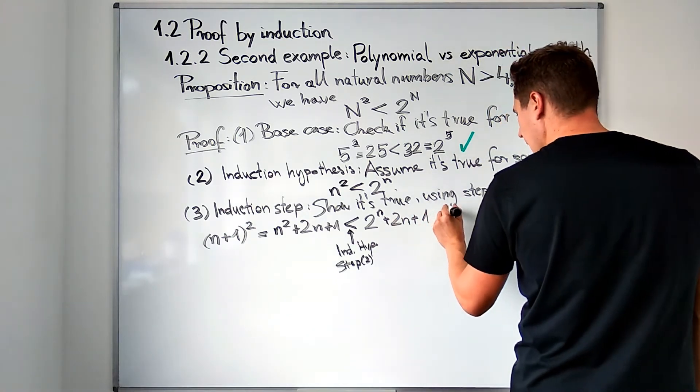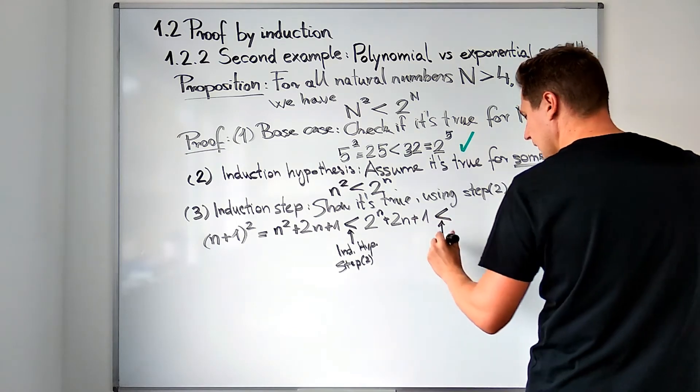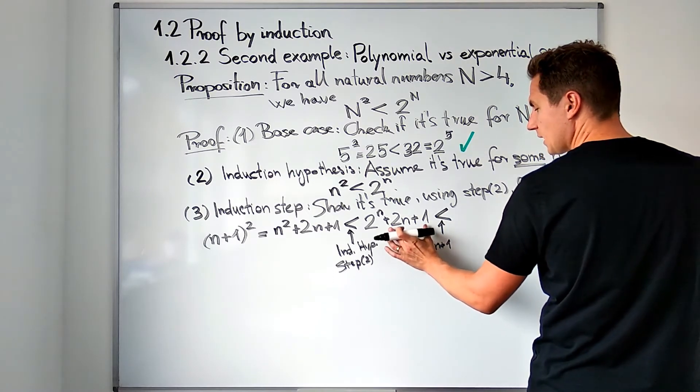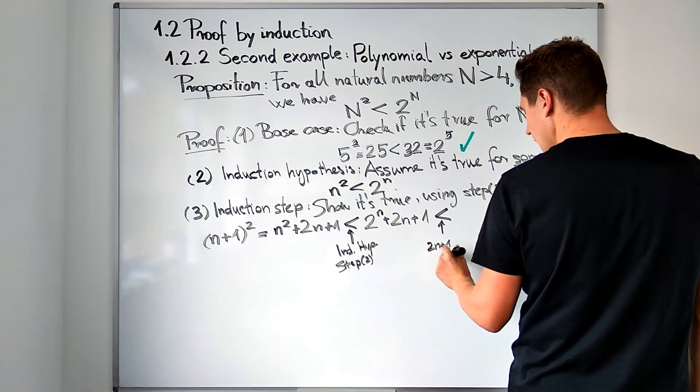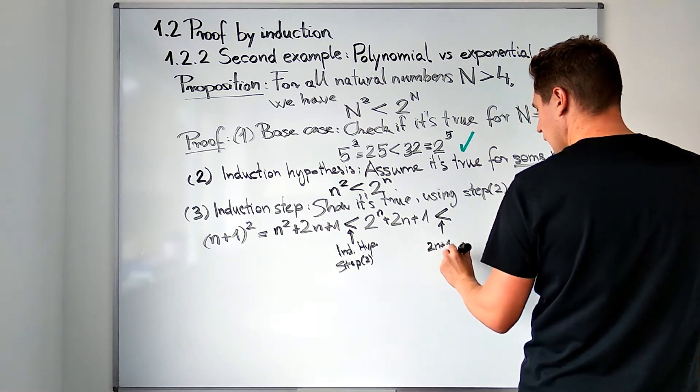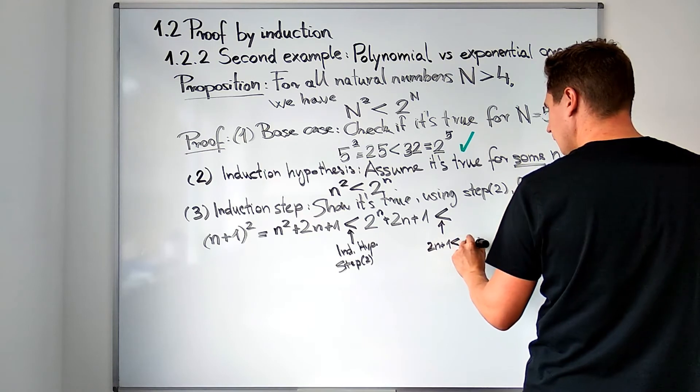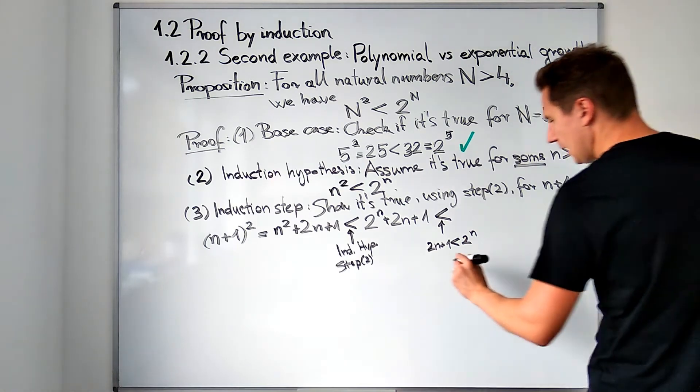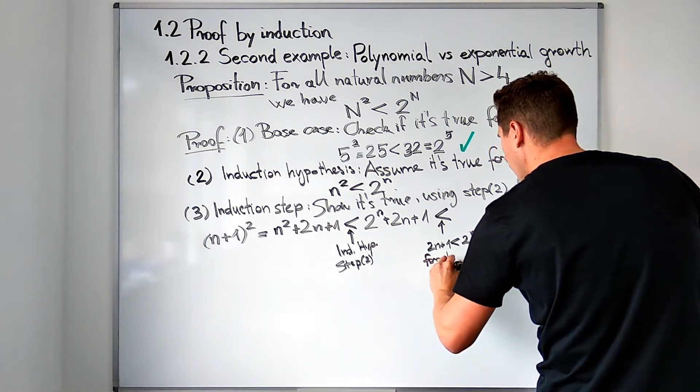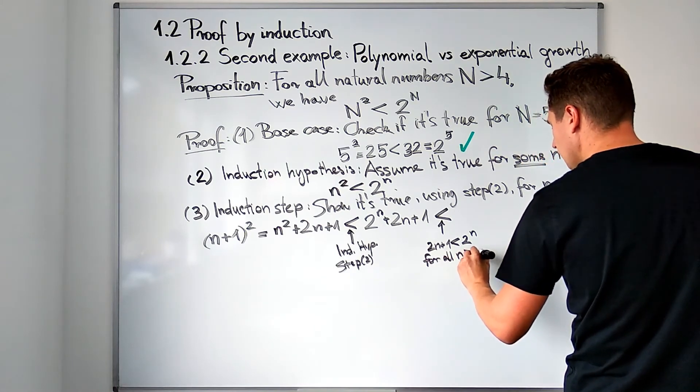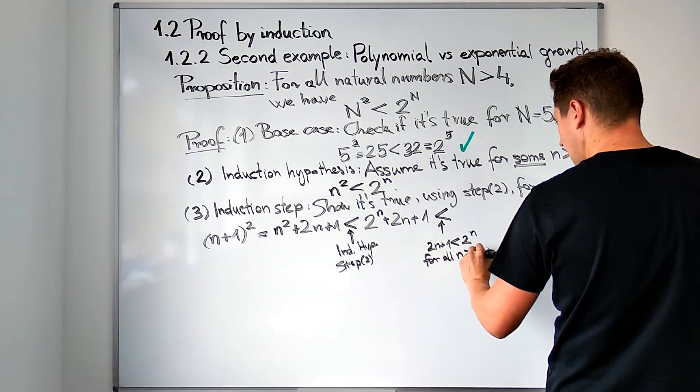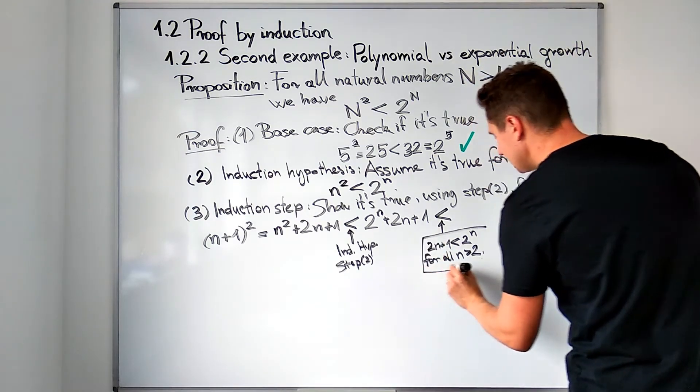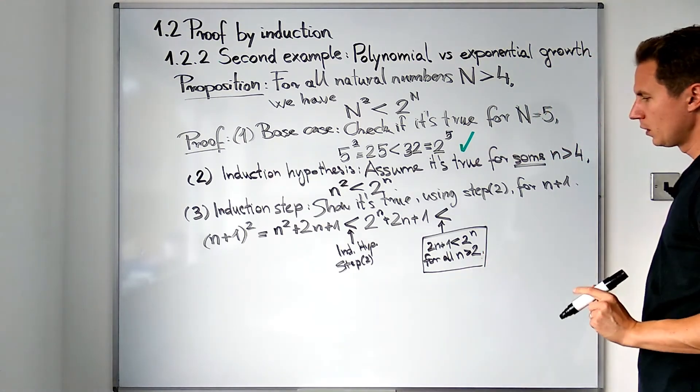Now, to finish this proof, I'm going to use another inequality which I'm not going to prove. What I'm going to assume here is that 2n plus 1, the second and third terms in this expression, their sum is strictly less than 2 to the nth power. I'm saying this is true for all integers greater than 2.